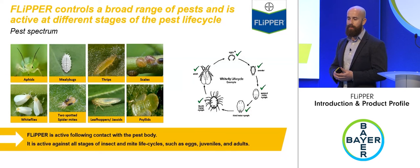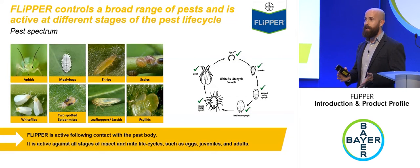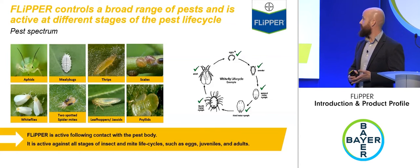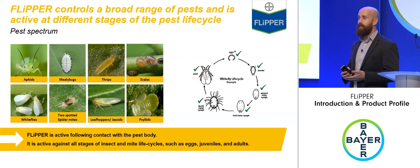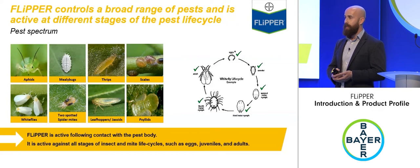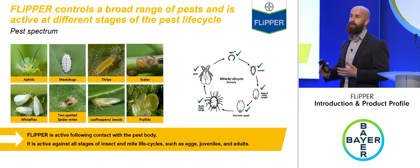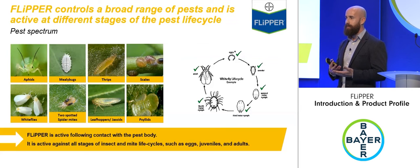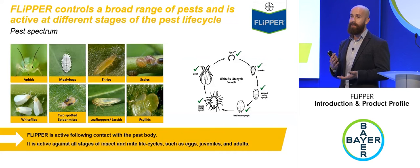Flipper controls an amazingly broad range of pests. We have over 200 GEP trials supporting its use for the major agricultural pests shown here. A really key point is that it's active on all stages of the pest life cycle — so yes, it's a contact-acting insecticide, but because it has effect on eggs, juveniles, nymphs, and adults, the effect of the application is quite long lasting.